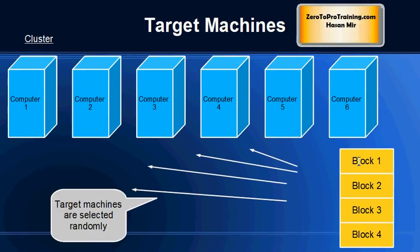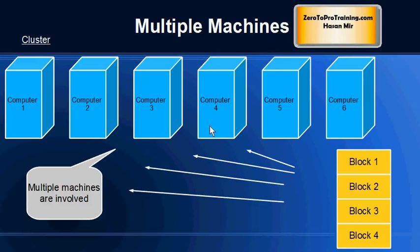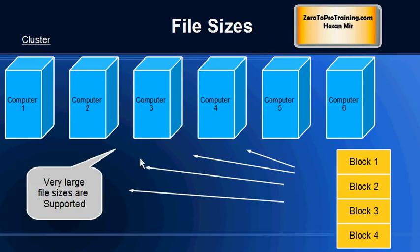Which computer each block will go to — the target machine — is selected randomly by the Hadoop software. So when you store a file using the Hadoop file system, multiple computers are playing a role in storing that file. This results in a big advantage: very large file sizes can be stored using Hadoop. In fact, a file could be even larger than the capacity of a single hard disk, because it is broken down into blocks spread across the cluster.